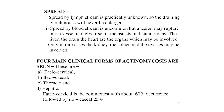Four main clinical forms of actinomycosis are seen: fasciocervical, iliocecal, thoracic, and hepatic. Fasciocervical is the commonest with about 60% occurrence, followed by iliocecal at 25%.